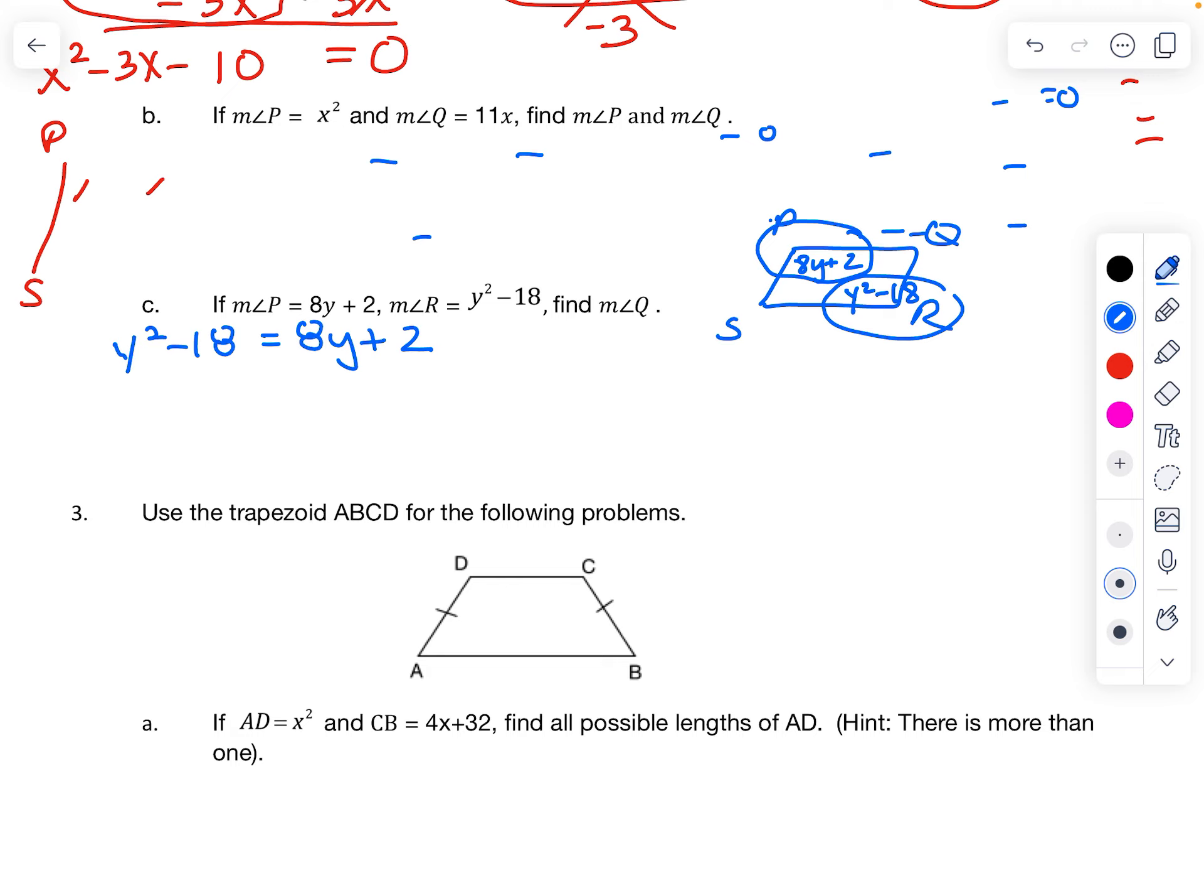Again, anytime you see a problem with y squared, we want to set equal to 0. So I'm going to subtract the 8y, subtract the 2. I have 0 here. I have y squared minus 8y. But notice these numbers are like terms. I can combine them, so that's going to give me negative 20.